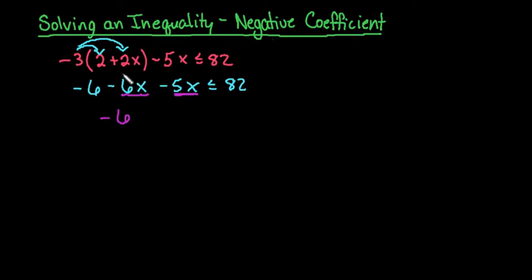And then what we're going to do is because we have negative 6 and negative 5, anytime the sign is the same think sum, and you're going to add those together. So 6 plus 5 gives me 11, and then I would keep the sign because both of them are negative. So we end up with negative 6 minus 11x is less than or equal to 82.